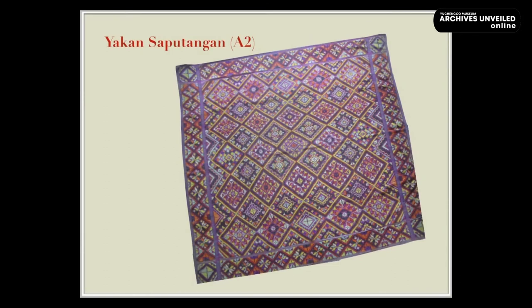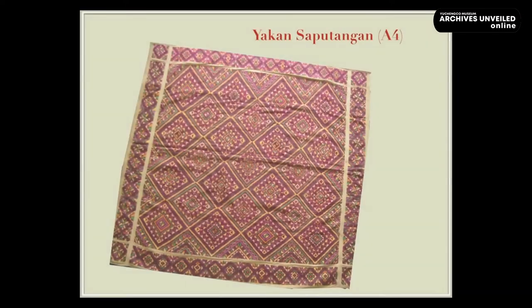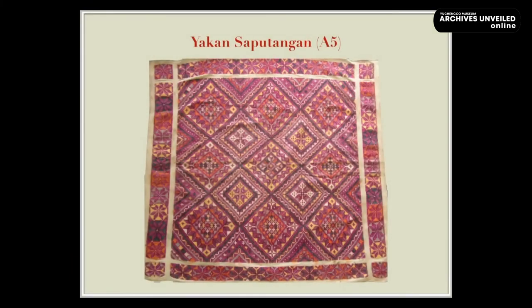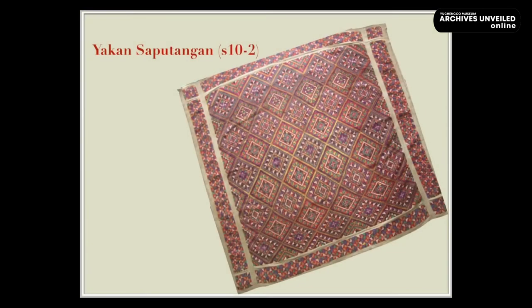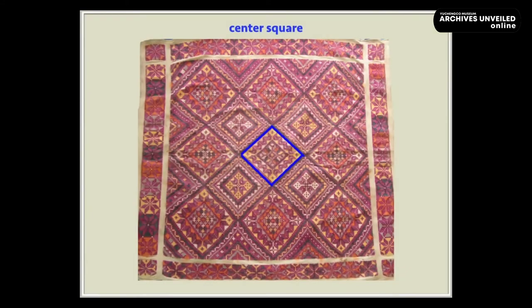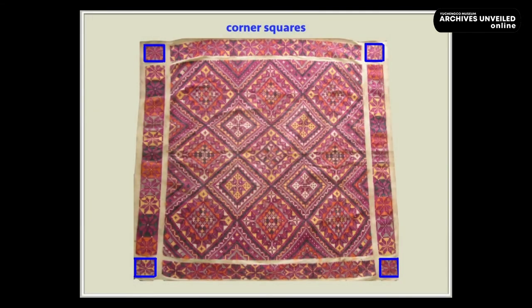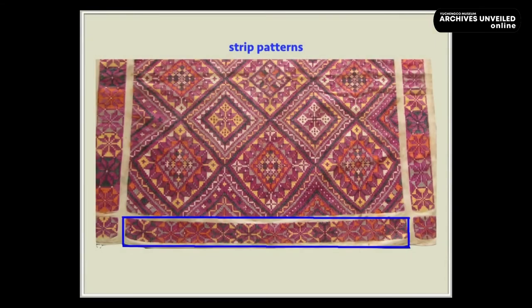In our study, we were fortunate to analyze closely four different examples of the yakhan saputangan, each showing a complex geometrical structure. Each of the saputangan shows a center square, four squares at the corners with identical motifs, and strip patterns at the sides.